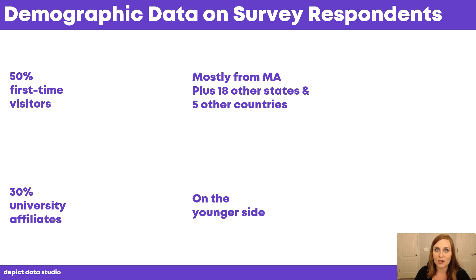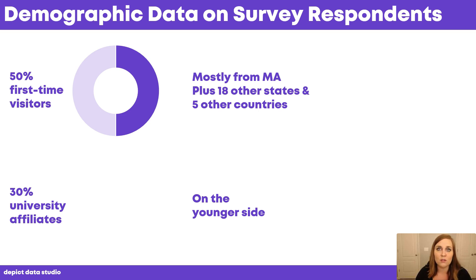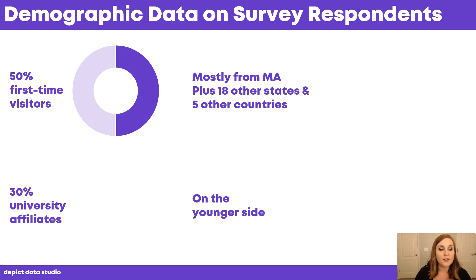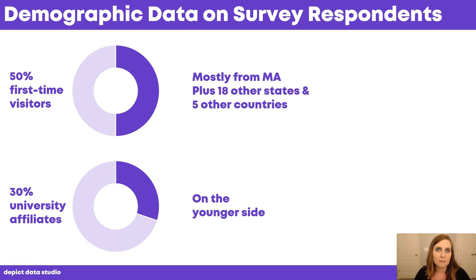Now let's add one visual per key fact. For 50 first-time visitors, that can be a simple donut chart. Donut charts are fine when they've got just two slices — maybe three, three slices max. It's a simple breakdown: 50 were first-time visitors, 50 weren't. Simple question, simple graph. For 30 university affiliates, we can do the same thing — another very simple donut chart. What about the location data? We know that these people are mostly from Massachusetts plus some other states and other countries. We can certainly make a map of the US, though it might get a little small on this slide.